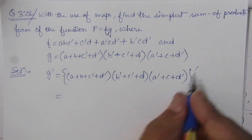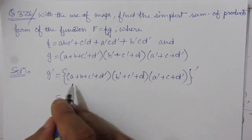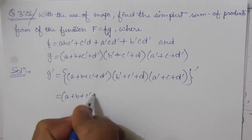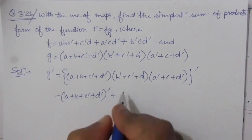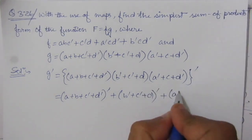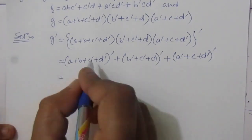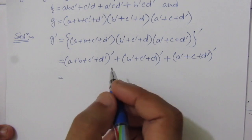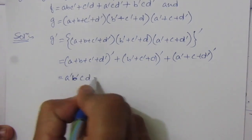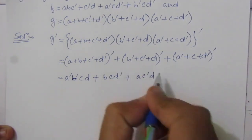Taking the whole complement and applying De Morgan's theorem, we get: g-bar = (a-bar · b-bar · c · d) + (b · c · d-bar) + (a · c-bar · d). This gives us the sum of product expression for g-bar.